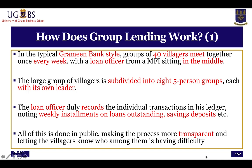How does group lending work? In the typical Grameen style, you get a group of about 40 villagers to meet together once every week with a loan officer from the MFI. The large group is later subdivided into about eight subgroups, each having about five members, and each group of five would have a leader. The loan officer records individual transactions, especially weekly installments and any savings. All these are done in public to make the process as transparent as possible and to let villagers know who among them is having difficulty.